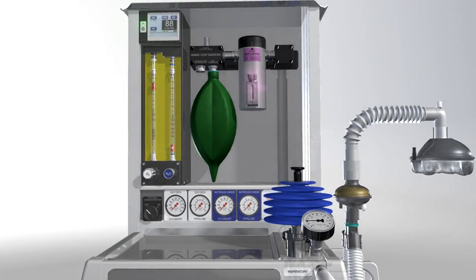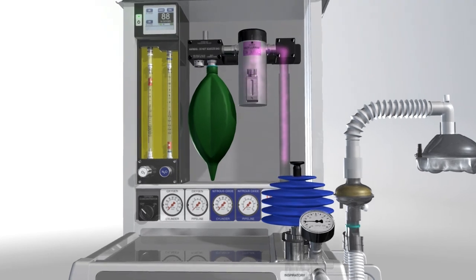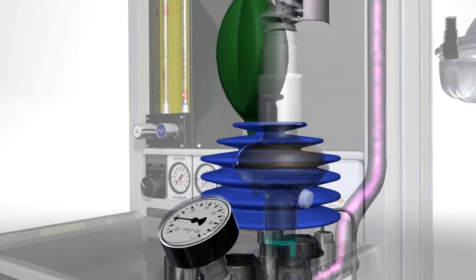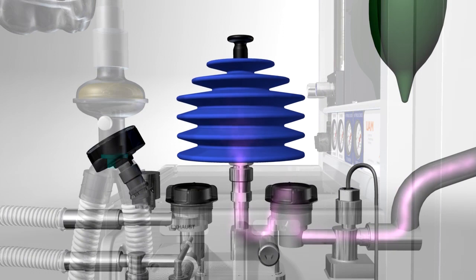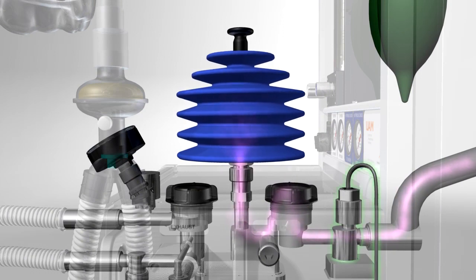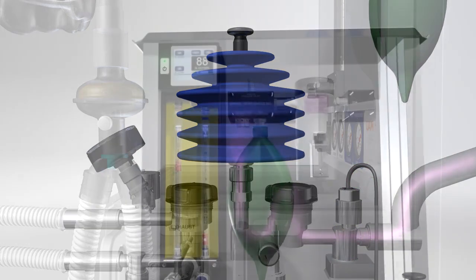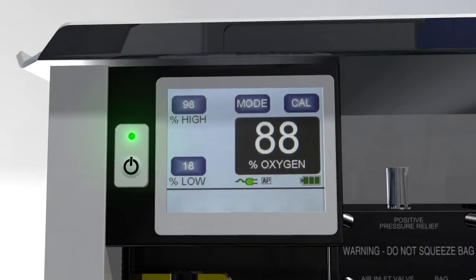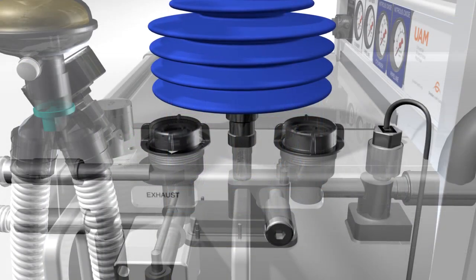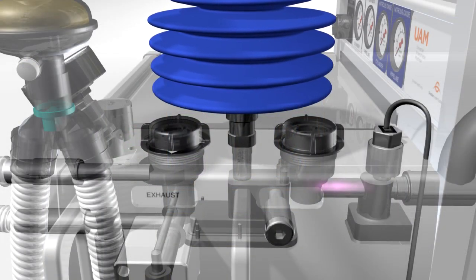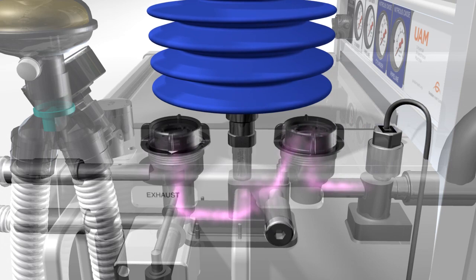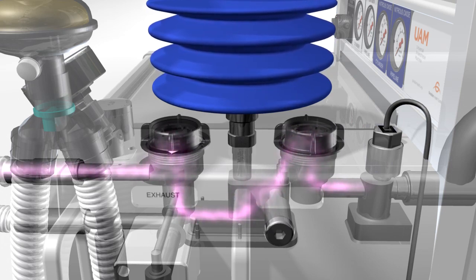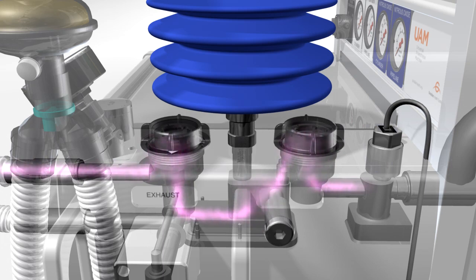The anesthetic gas flows at low pressure from the back bar to the breathing block and the bellows. A sensor reads the oxygen concentration of the gas passing to the patient. The reading is displayed on the oxygen monitor screen. As the gas continues from the oxygen sensor, it passes the first one-way valve, then the bellows chamber or ventilator, and then the second one-way valve.